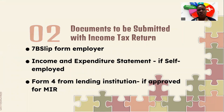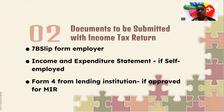What documents should you submit with your income tax return? If you're employed, you need a 7B slip from your employer, and you use the information on that slip to fill out your income tax return. If you're self-employed, you need to attach an income and expenditure statement to your return. If you have the necessary accounting skills, you can submit a trading and profit and loss statement and a balance sheet along with your return.